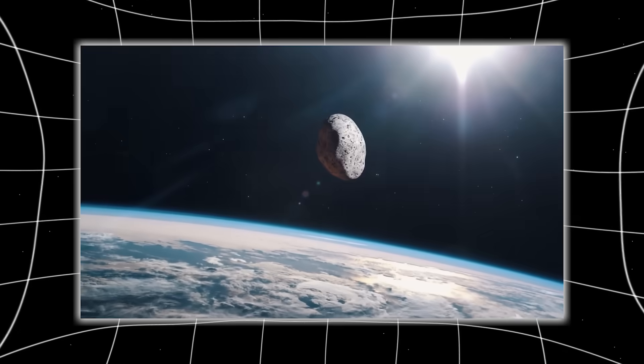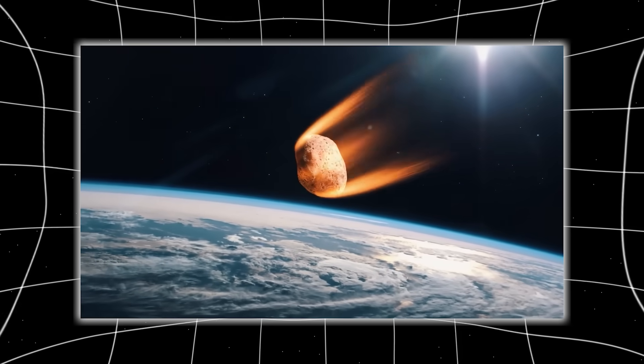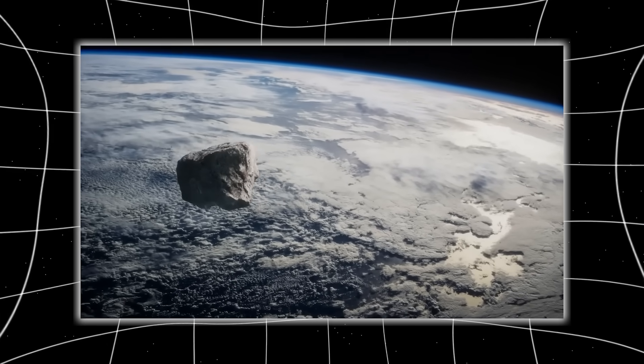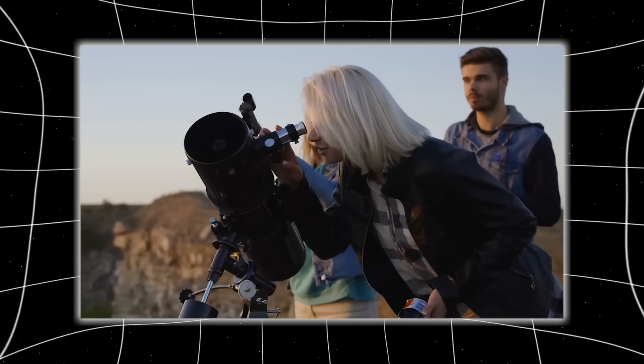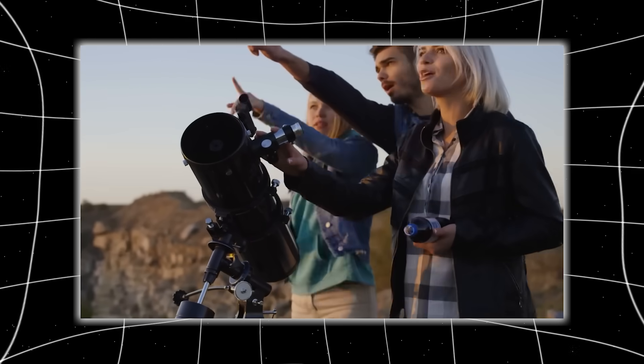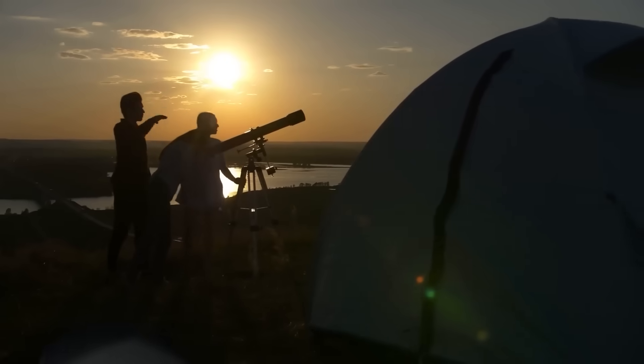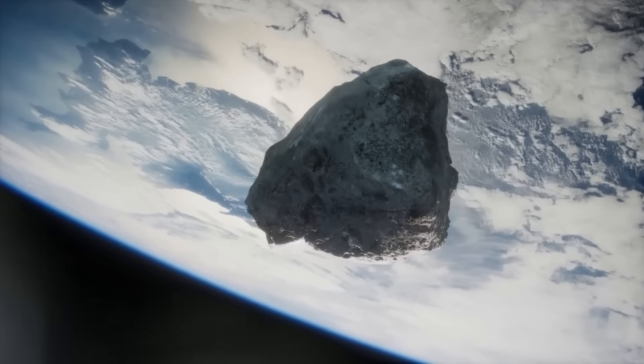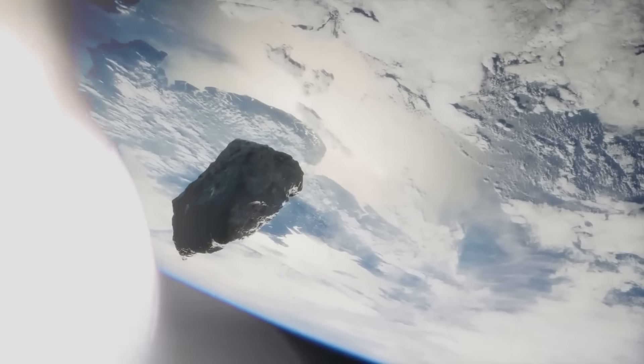This wasn't a leftover rock from the formation of the solar system. This was something that had been traveling through the dark for tens of thousands of years, unseen. And now, it had crossed the threshold into our solar domain. But the deeper mystery wasn't just where it came from. It was why now. Because before 2017, we had never seen a single interstellar object. Now, we've seen three. And each one has been stranger than the last.